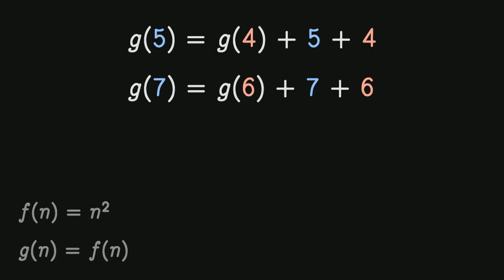So it looks like there is a kind of pattern, or a kind of relation, between the function at a point x and the function at a point x minus 1. So if x is equal to 7, we can generalize g of x as g of x is equal to g of x minus 1 plus x plus x minus 1.